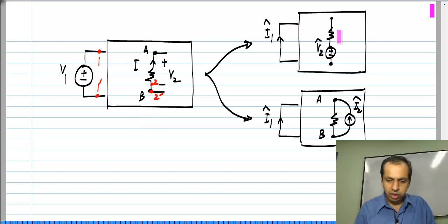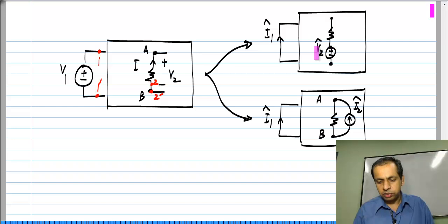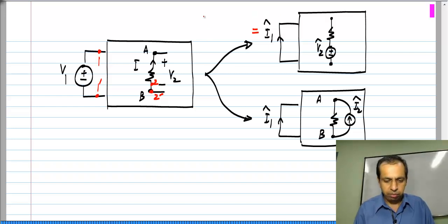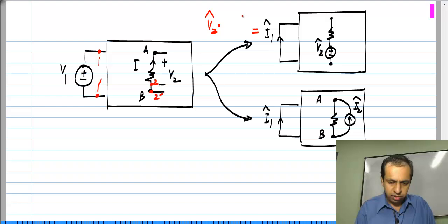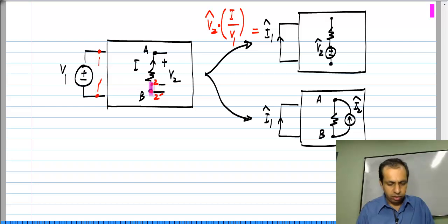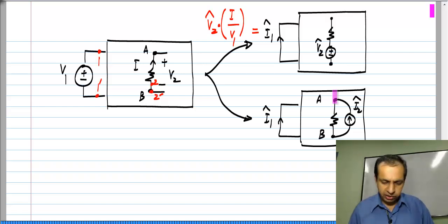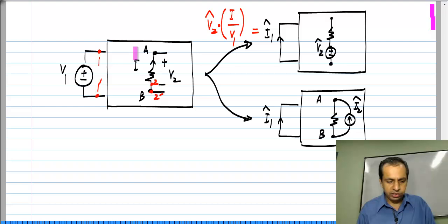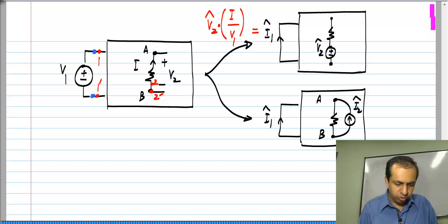Now the resistor is part of the two-port — it is really the port current. Clearly, V2-hat is applied to the second port and the first port is short-circuited, so I1-hat can be found without doing any further calculations. It is the same as V2-hat times the ratio I by V1, which is nothing but Y21 with this as the first port and that as the second port. In the current-source case, you can relate it to the original by defining different two ports.